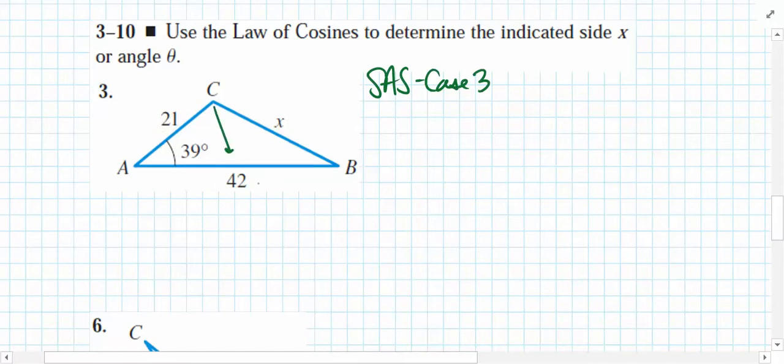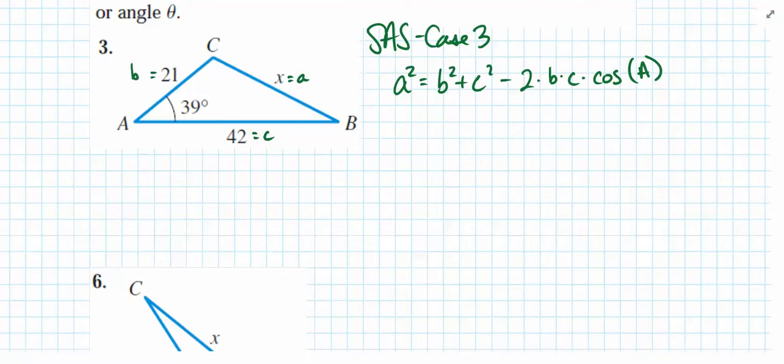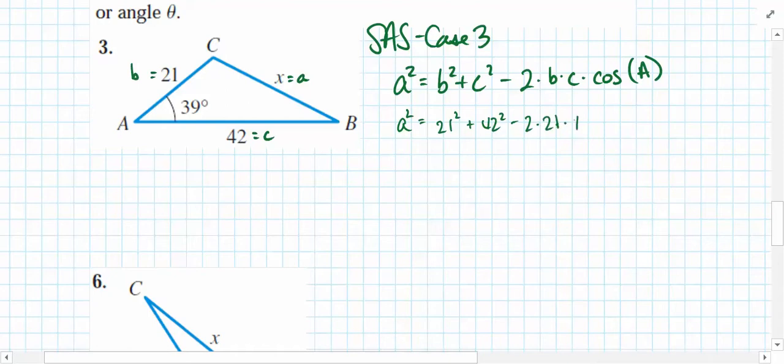Now, this side down here would be called side length C. This side here, 21, is equal to side length B. And the X is the unknown side length A, because that's across from the angle measure A. So the form of the law of cosines that I would most likely use here would be A squared equal to B squared plus C squared minus 2 times B times C times cosine of A. Let's replace those values and then solve for A. So we have A squared equal to 21 squared plus 42 squared minus 2 times 21 times 42 times cosine of 39 degrees.